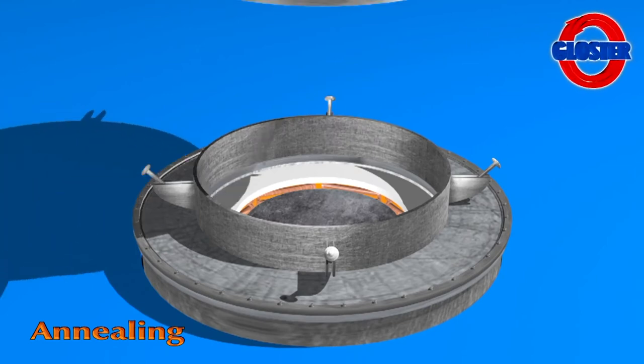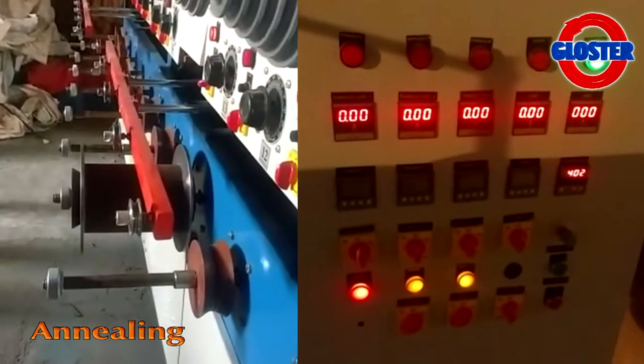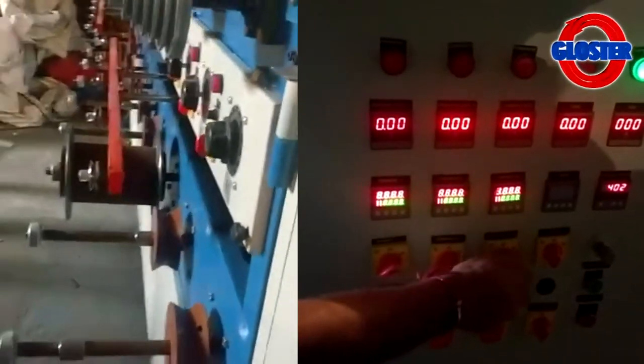Next process is annealing the drawn copper wire to reduce hardness, stress and eliminate chances of wire breakages during use.